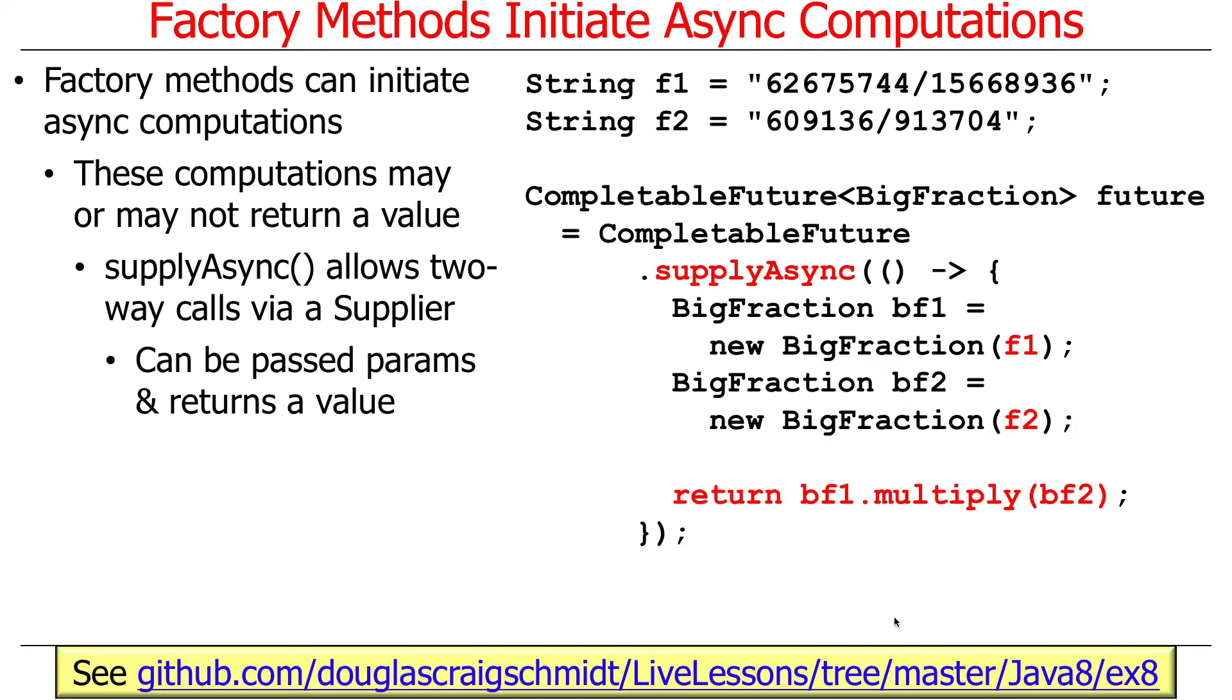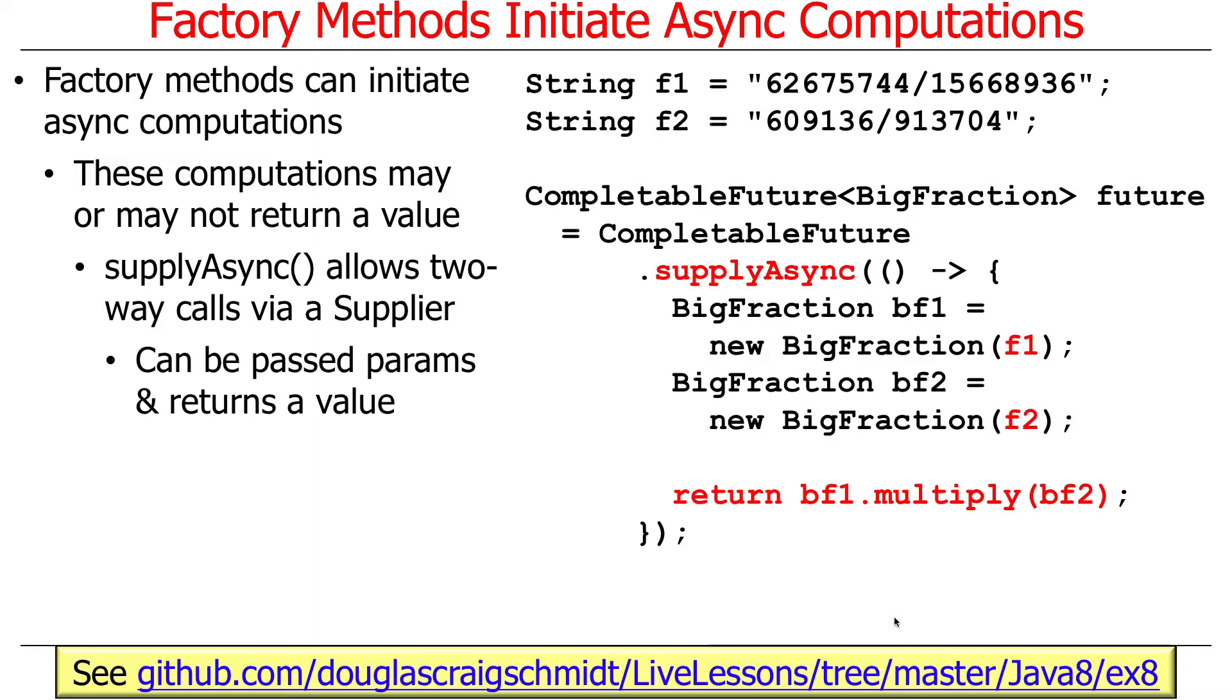Here is a simple example. This is something that's just a variant of what we saw before. This is going to use supply async in order to multiply these two big fractions. The result will come back as a big fraction, but it comes back as a completable future to a big fraction. So supply async is a very important method. You will use it all over the place in programming assignment 3, 3A, 3B. Supply async is what's used to start things off in the background, and what it does is it's going to run things in the fork join pool.